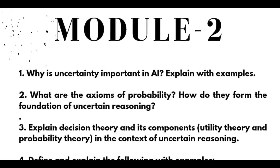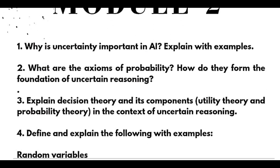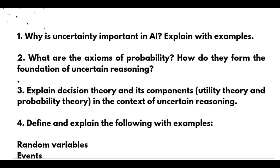Coming to Module 2, the important questions include: why is uncertainty important in AI, with examples; what are the axioms of probability and how do they form the foundation of uncertain reasoning; and explain decision theory and its components — utility theory and probability theory — in the context of uncertain reasoning.